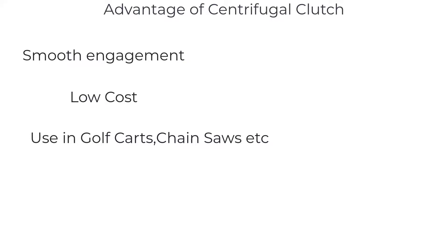The main advantage of a centrifugal clutch is it can be used in small machinery and where you have low RPM. It provides smooth engagement and is used in vehicles like golf carts, lawnmowers, chainsaws, or tanks, etc. It also has low maintenance cost and it automatically engages and disengages.